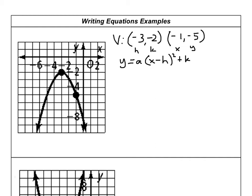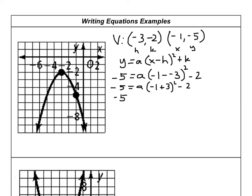So y is negative 5, equals a times x is negative 1 minus h is negative 3, squared, and k is negative 2. Negative 1 minus negative 3 is negative 1 plus 3, which equals 2. So negative 5 equals a times 2 squared minus 2. Two squared is 4, so negative 5 equals 4a minus 2. Adding 2 to each side gives negative 3 equals 4a. Dividing by 4, a is negative three-fourths.